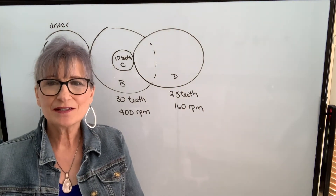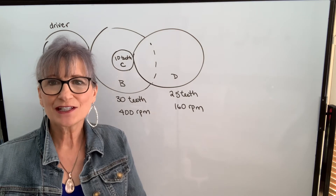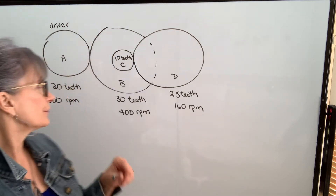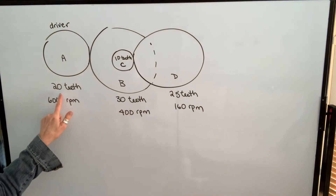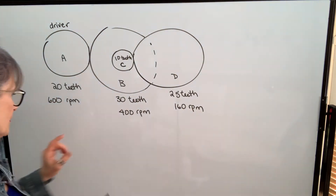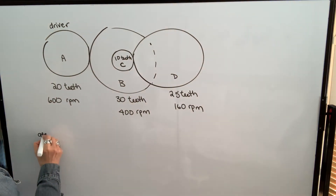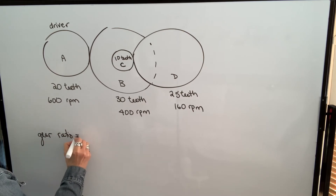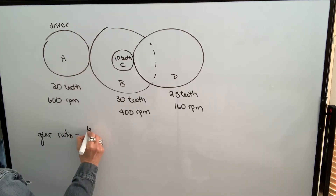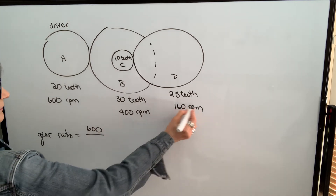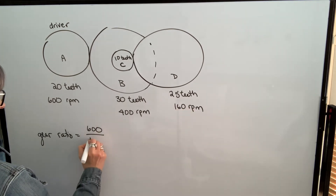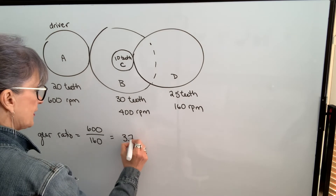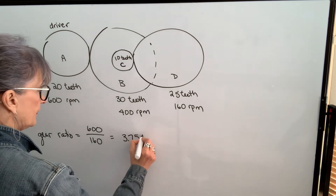If I have the speeds, it's fairly easy to find your gear ratio. You just take the very first speed and divide by the very last speed. So in this case, because A is the driver, our gear ratio is 600 divided by 160, and we get 3.75 to 1.